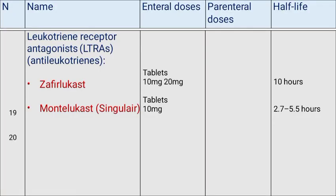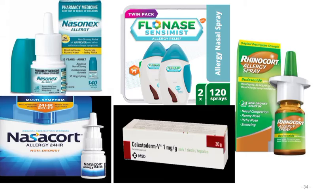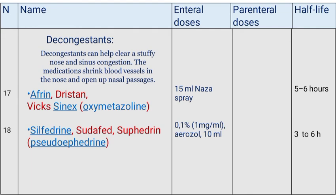Leukotriene receptor antagonist prescriptions: zafirlukast tablets are available in 10 mg and 20 mg, half-life 10 hours. Montelukast (Singulair) tablets are available in 10 mg, half-life 2.7–5.5 hours. Decongestants help clear a stuffy nose and sinus congestion by shrinking blood vessels in the nose. Examples include oxymetazoline (Afrin, Dristan, Vicks Sinex), enteral doses 15 mg. Pseudoephedrine, enteral doses 0.1% (1 mg/ml aerosol, 10 ml), half-life 3–6 hours.